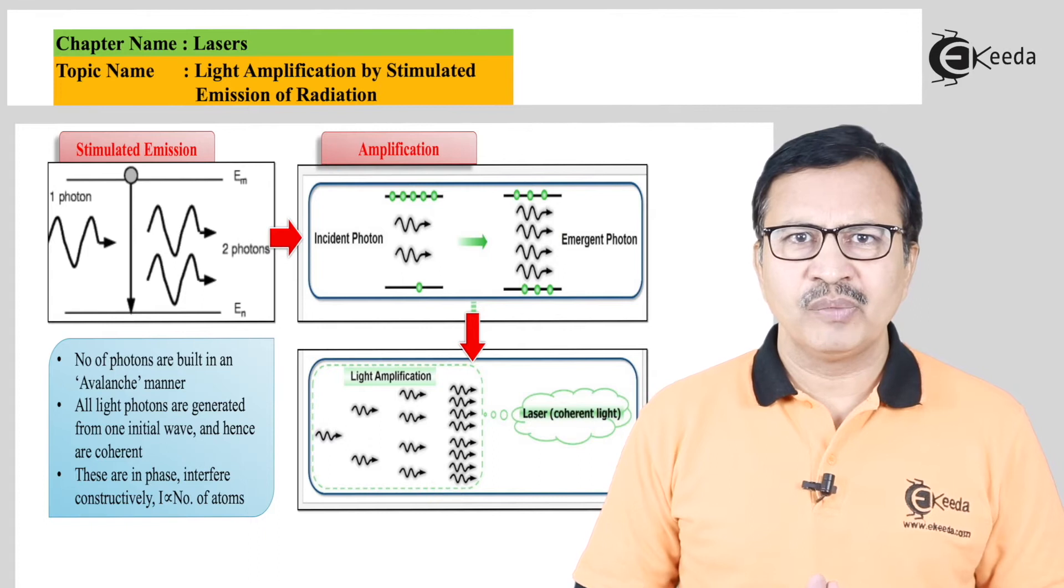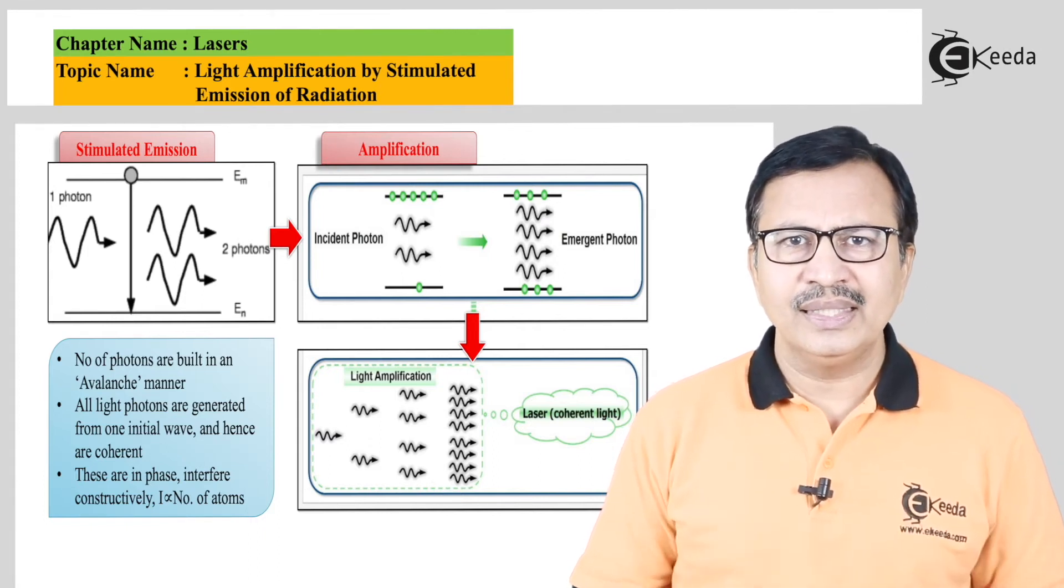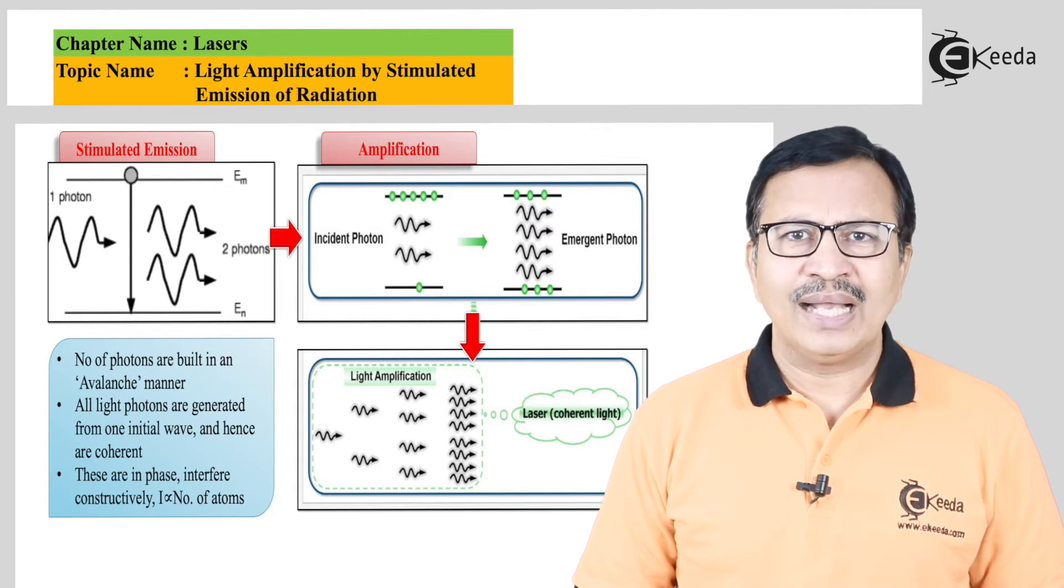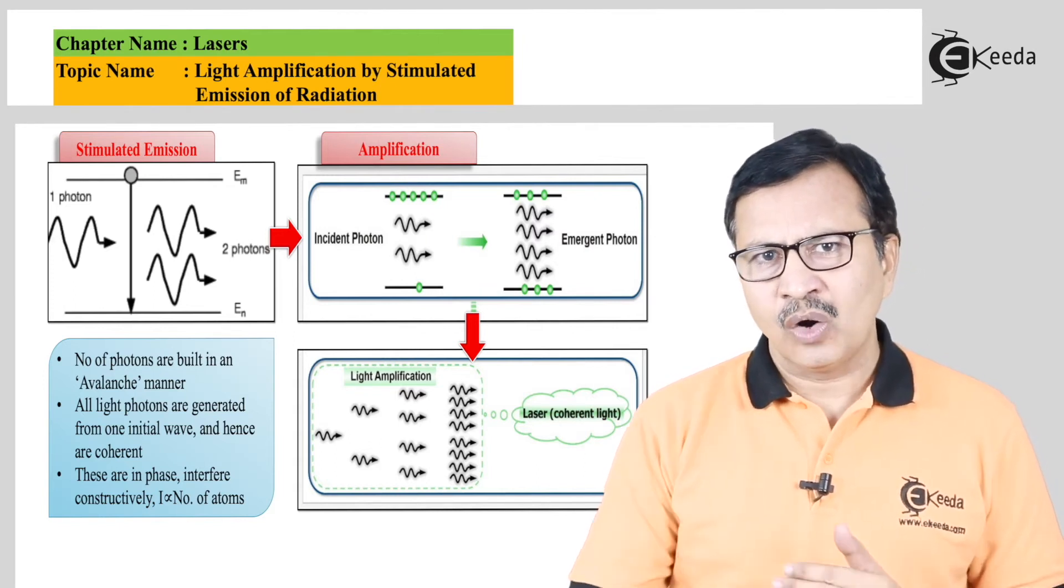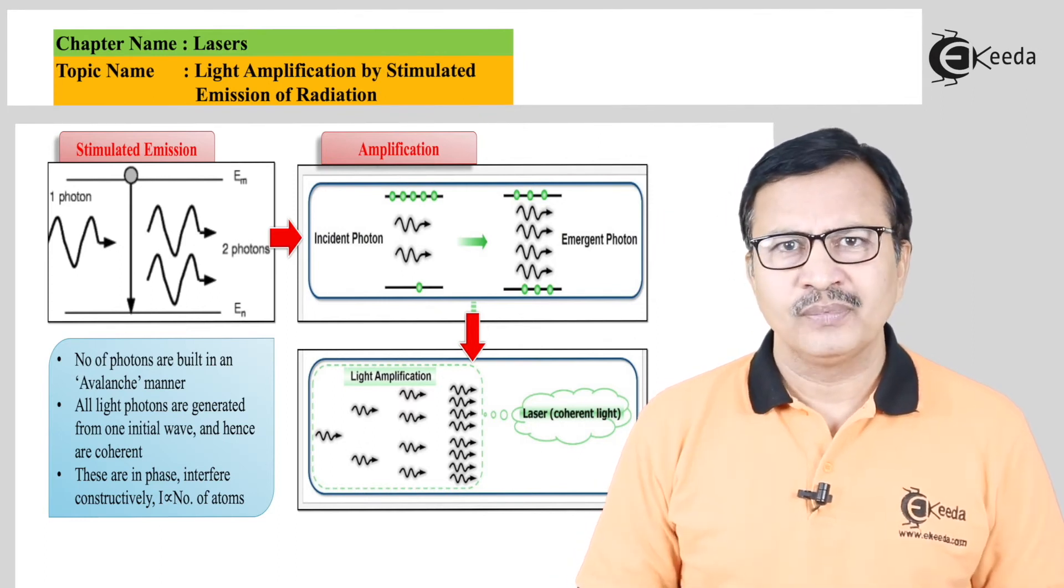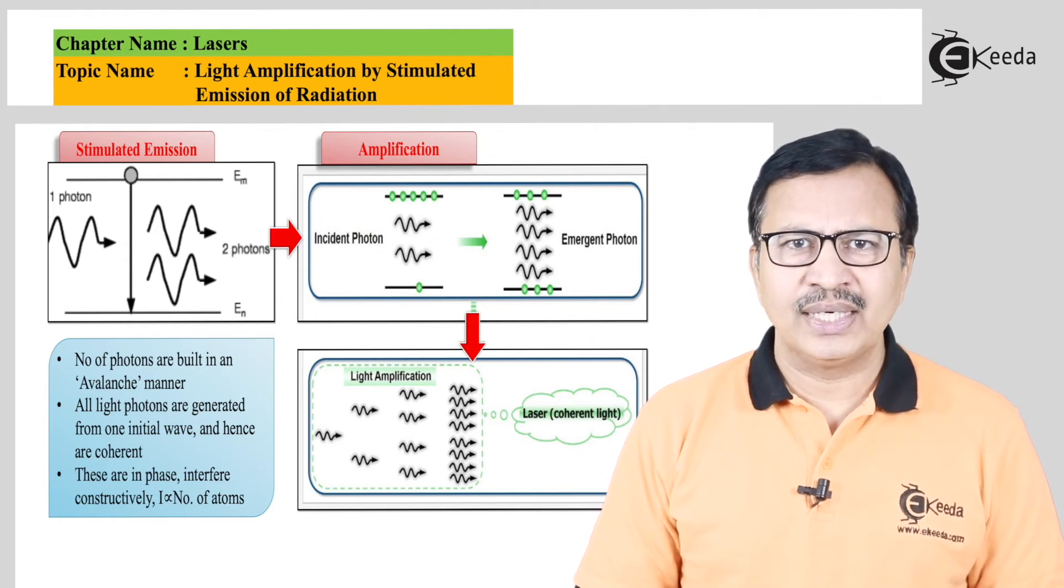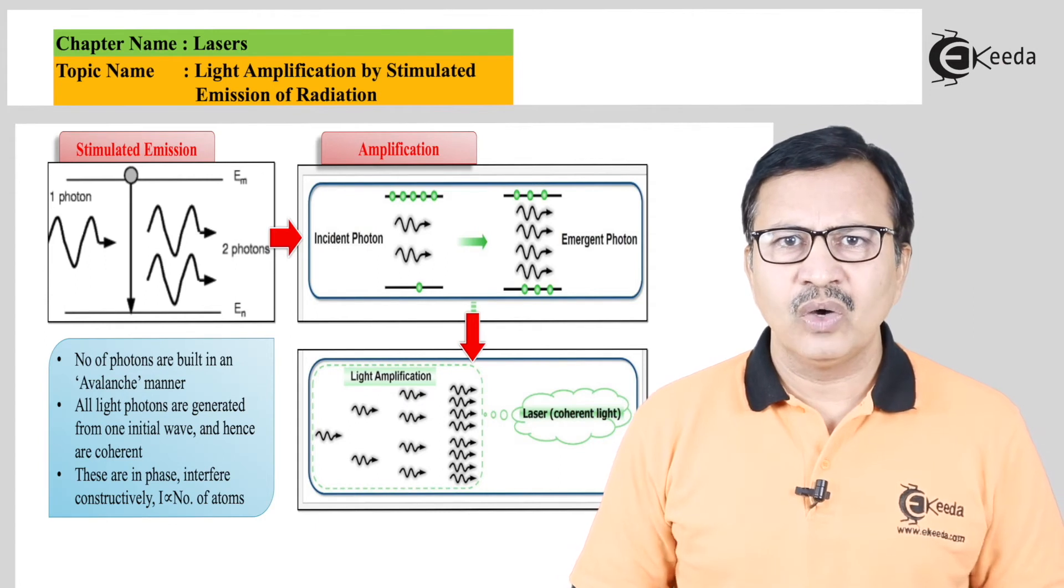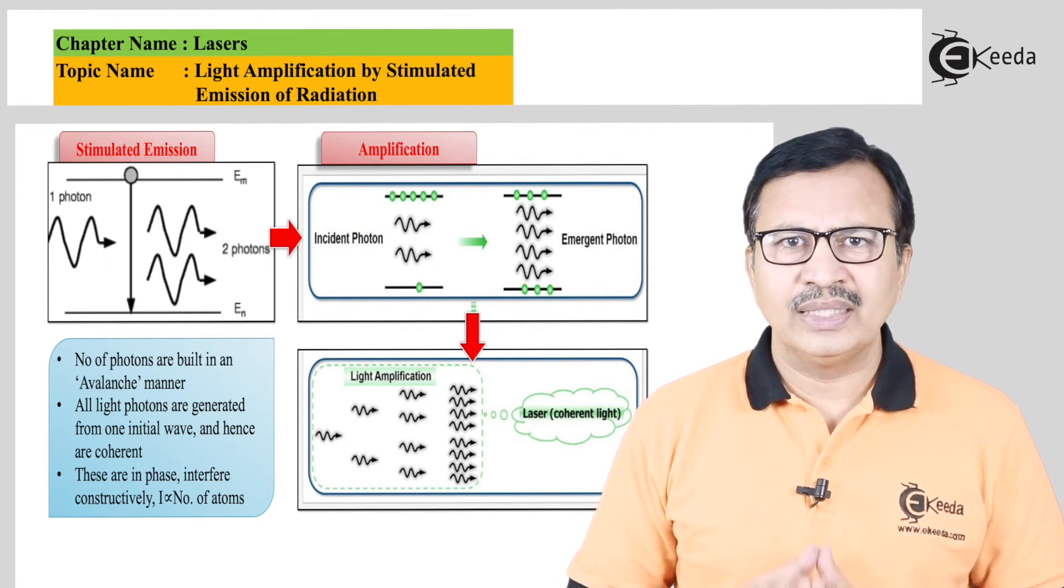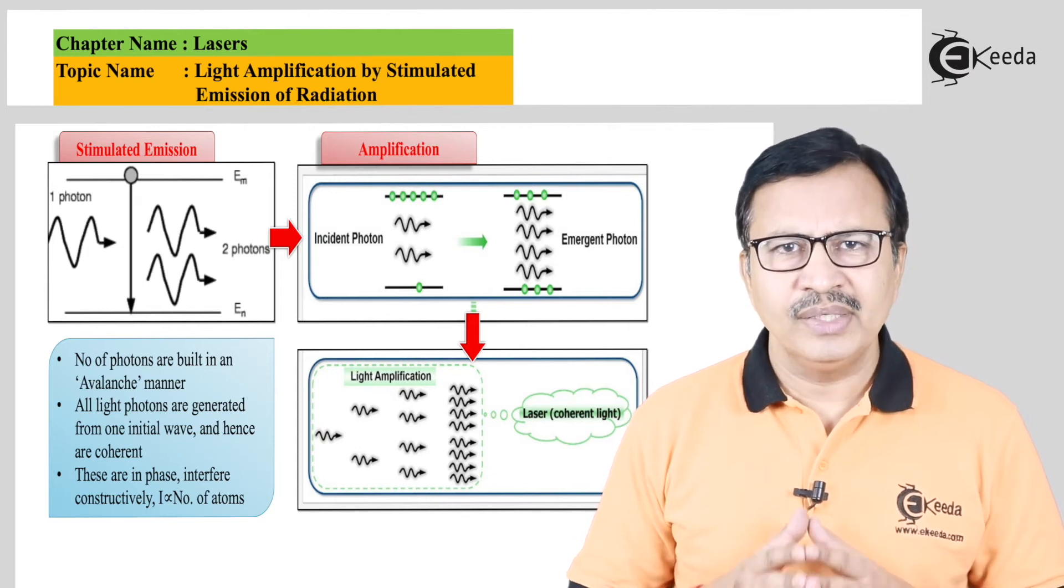Because of this avalanche or amplification, the resulting light will be coherent. It is coherent because all of this started with one photon, and hence the entire collection of photons that has been generated will all be in phase and will interfere constructively.